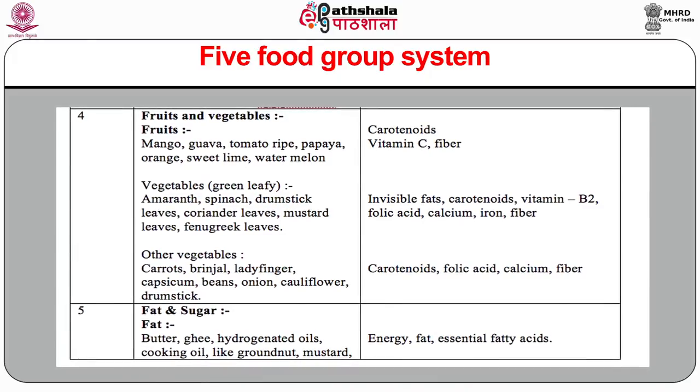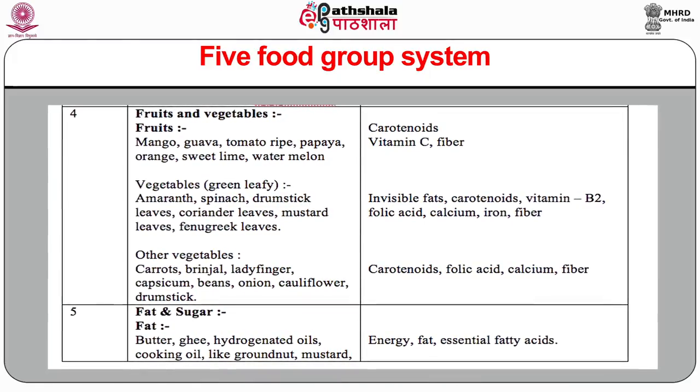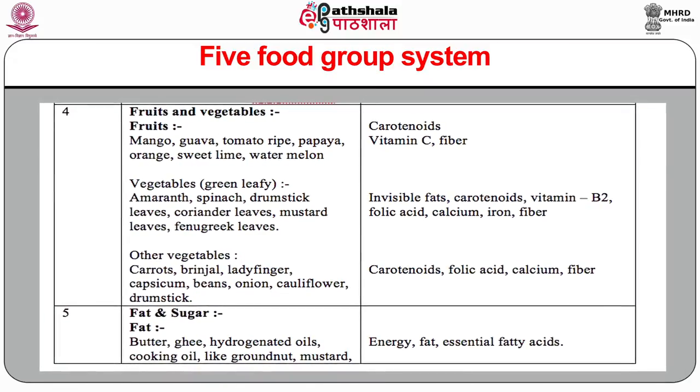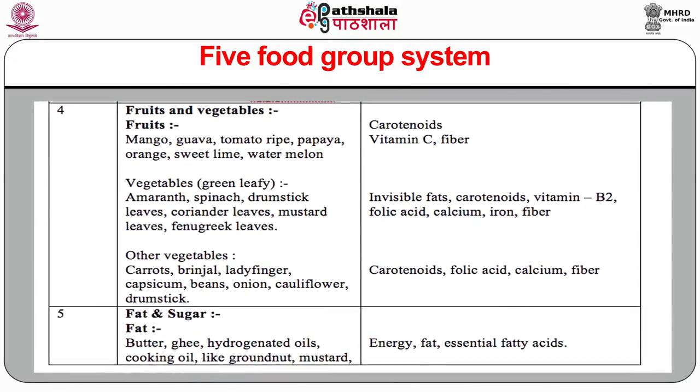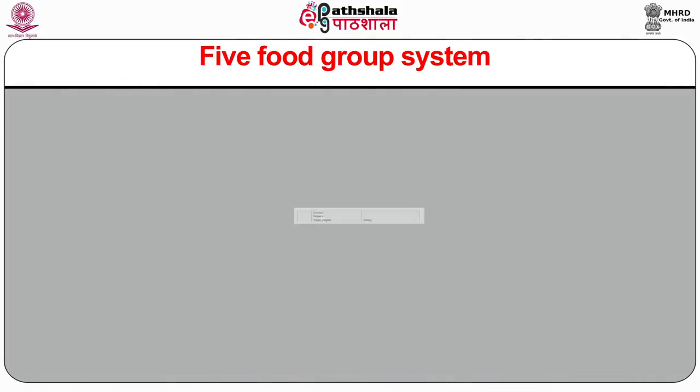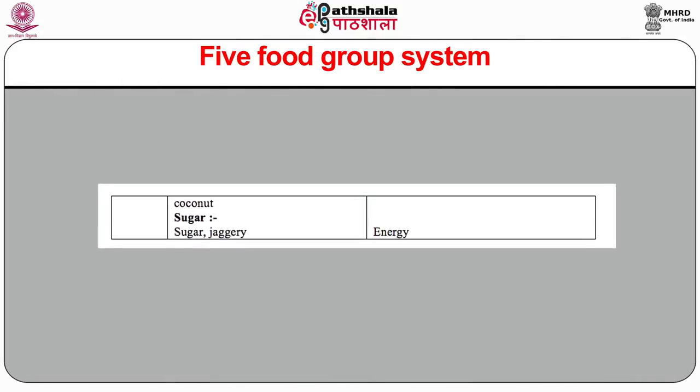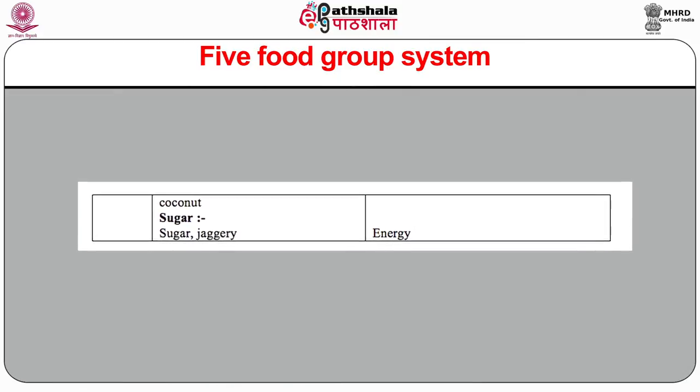Fats and sugar include butter, ghee, hydrogenated oils, cooking oils like groundnut, mustard and coconut, and sugar and jaggery — providing energy, fat and essential fatty acids. Understanding food categories is essential for nutritional adequacy, to plan wholesome and nutritious menus, and to assess the nutritional diets of an individual, helping us to know any deficiency from any of the five food groups.